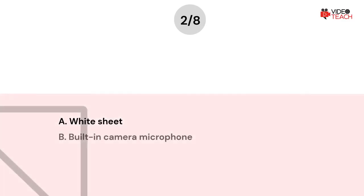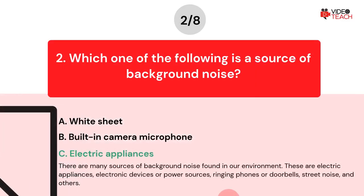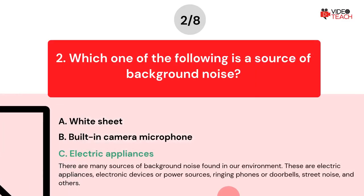The correct answer is Option C. There are many sources of background noise found in our environment. These are electric appliances, electronic devices or power sources, ringing phones or doorbells, street noise and others.